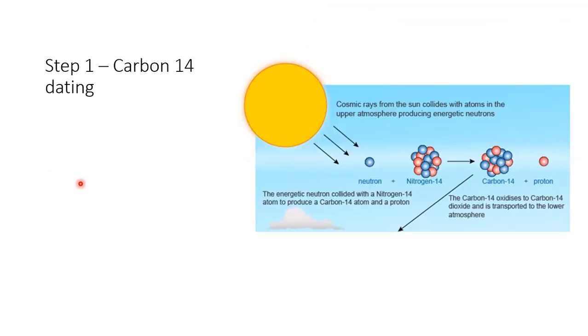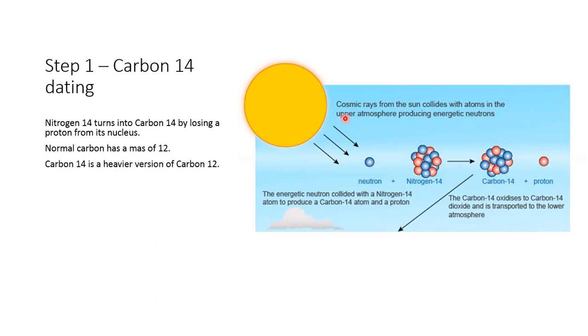So how does this work? Nitrogen-14 turns into carbon-14 by losing a proton from its nucleus. Normal carbon has a mass of 12. Carbon-14 is a heavier version of carbon-12. So in the upper atmosphere, energy from the sun combines to make a neutrino. That neutrino collides with the nitrogen. The nitrogen then loses a proton, which makes it carbon-14, which is just a heavier version of carbon-12.